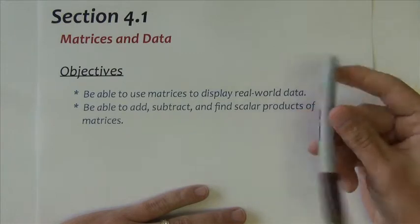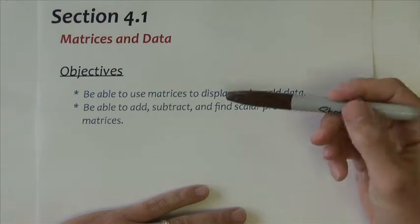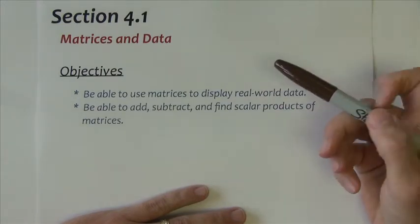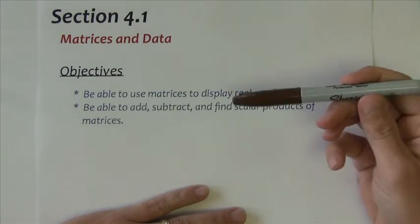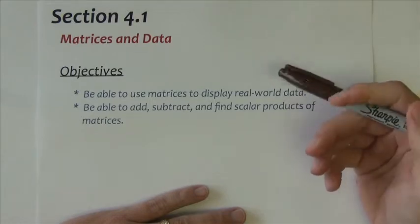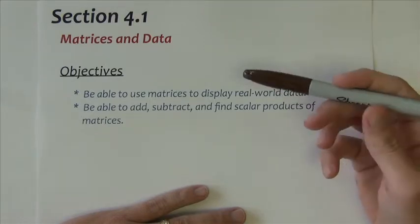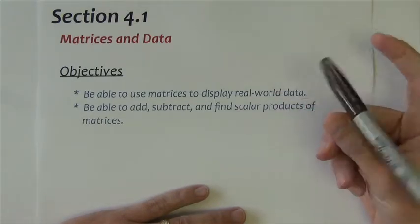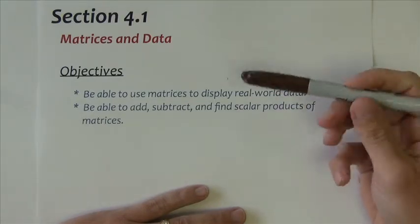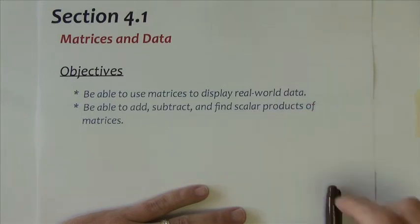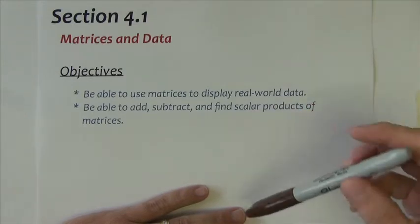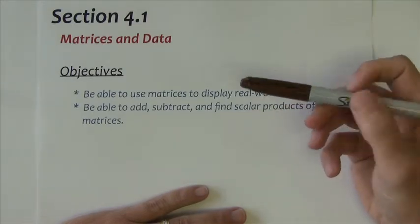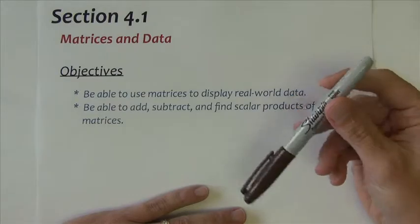Section 4.1 is titled Matrices and Data. We're going to introduce you to what a matrix is. There's a lot of vocabulary in this section to learn, and we're going to go over some basic operations with matrices — how we can add them, subtract them, multiply them, etc.